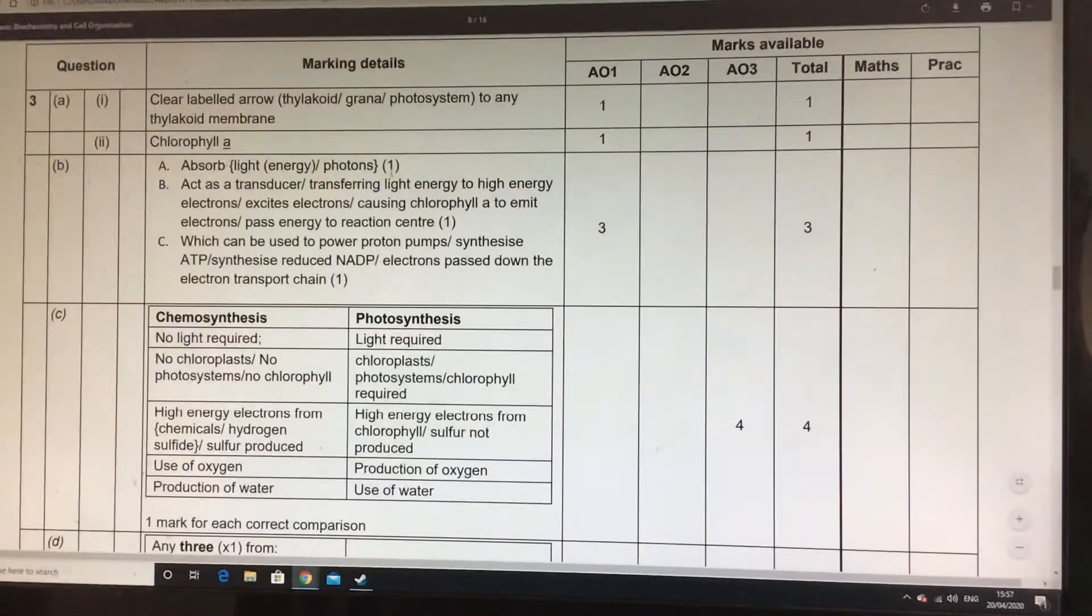Absorb light, photons. Act as transducer or something along the lines of the electrons becoming excited and the electrons passing on that energy to the reaction centre. And as a last one, that as it's flowing through the electron transport chain,